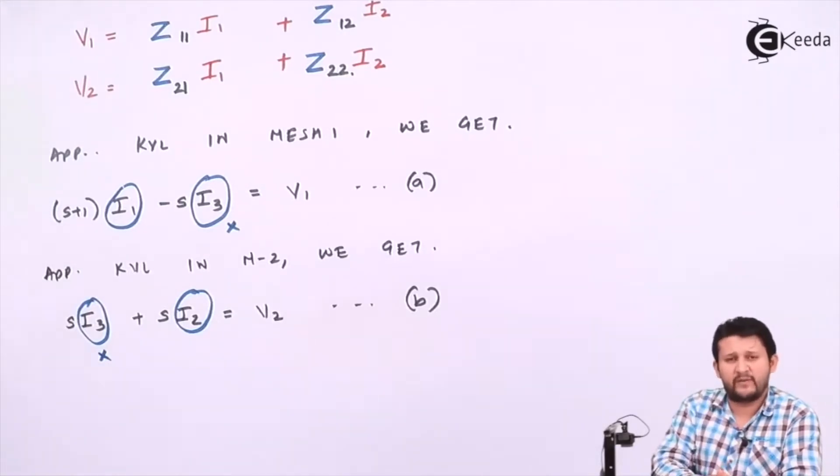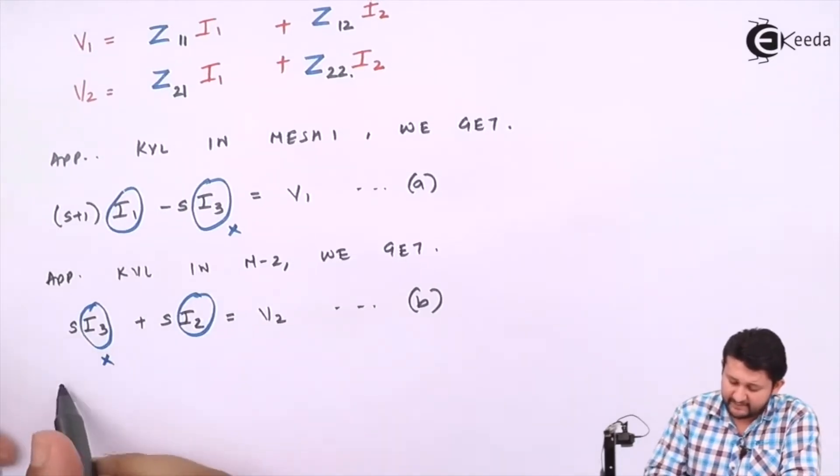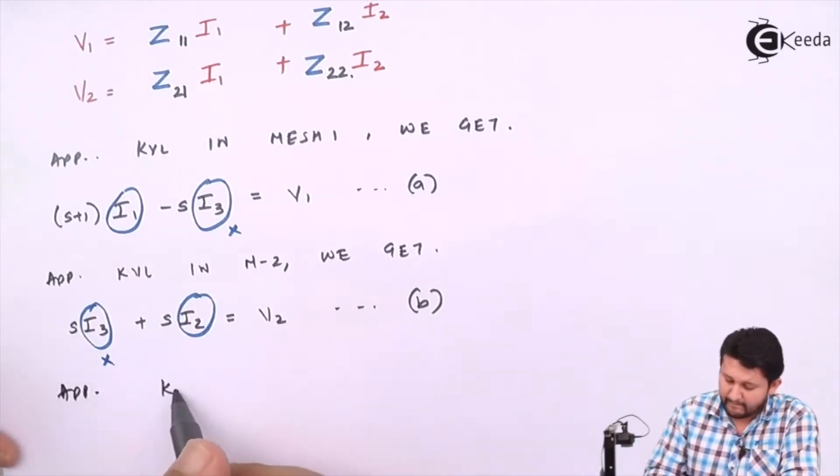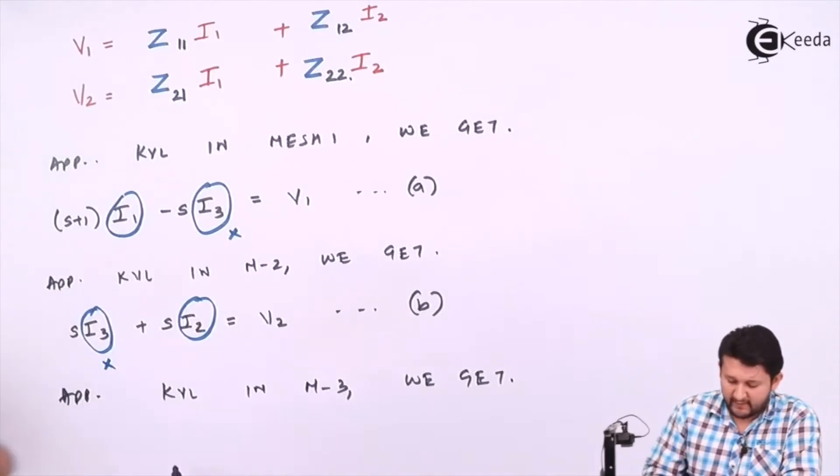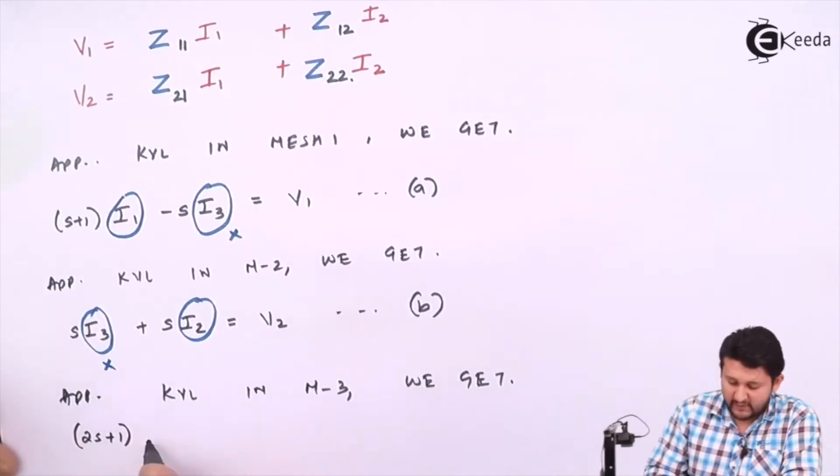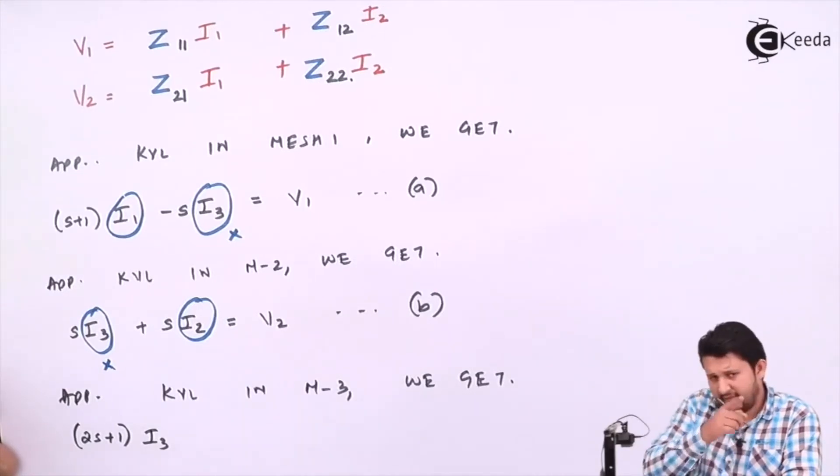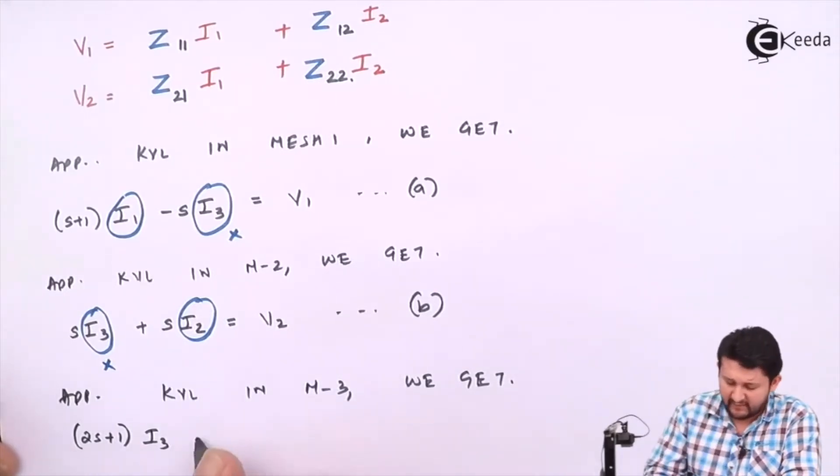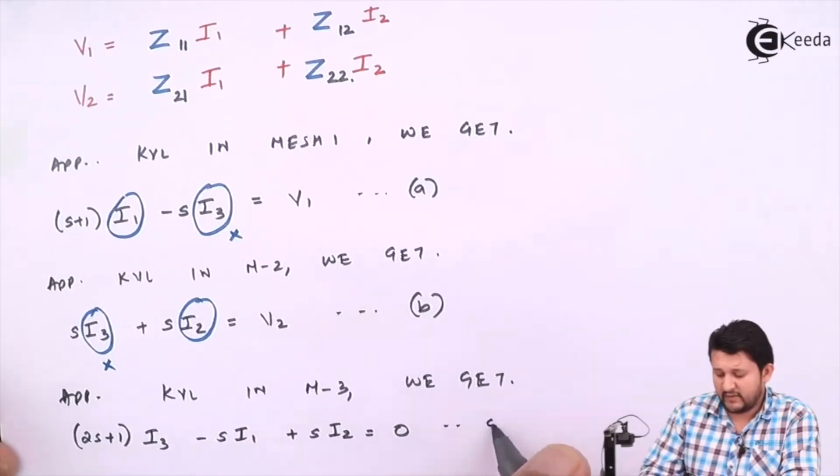So let's apply KVL in the middle. Let's see what we get. Applying KVL in mesh 3, adding all the terms, we'll get (2s+1)I3. Check if there are any other currents—I1 and I2 both are present. I1 is flowing opposite to I3, so the sign is minus sI1. I2 is flowing in the same direction as I3, so the sign is minus sI2. If no voltage source, it equals zero.